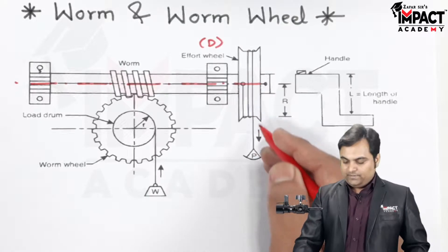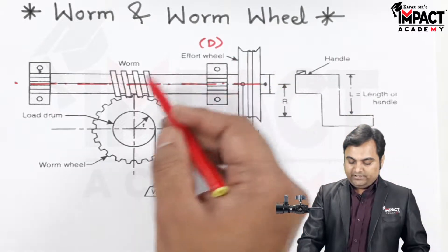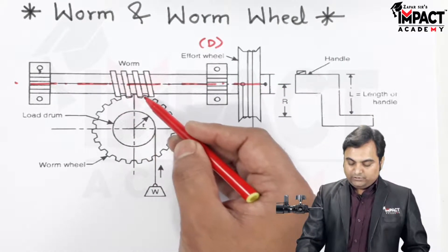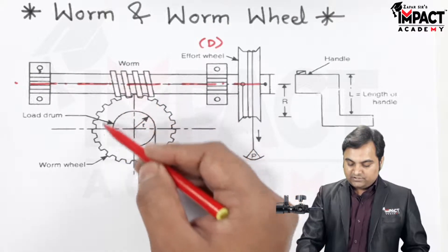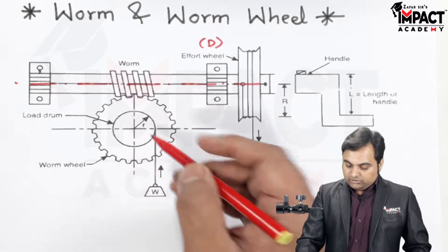effort at the effort wheel by pulling this effort wheel downward, the effort wheel would be rotating and similarly the worm would rotate, and that would lead to the rotation of this worm wheel. When it rotates,